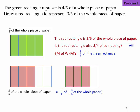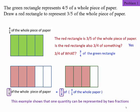So essentially, this three-fifths of the whole piece of paper is exactly the same as three-fifths of the green rectangle. But the green rectangle is actually four-fifths of the whole paper, right? So what did we learn? Now this example shows that one quantity, which is the red rectangle,